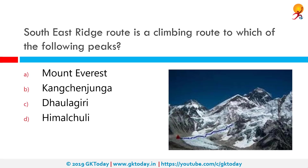Southeast Ridge, also known as the Southeast Col Road, is a climbing route to which of the following peaks? It is a climbing route to Mount Everest. Everest is the tallest mountain in the world at about 8,848 meters above sea level and sits directly on the border of Tibet and Nepal. There are two commonly climbed routes: the South Col Road and the Northeast Ridge.